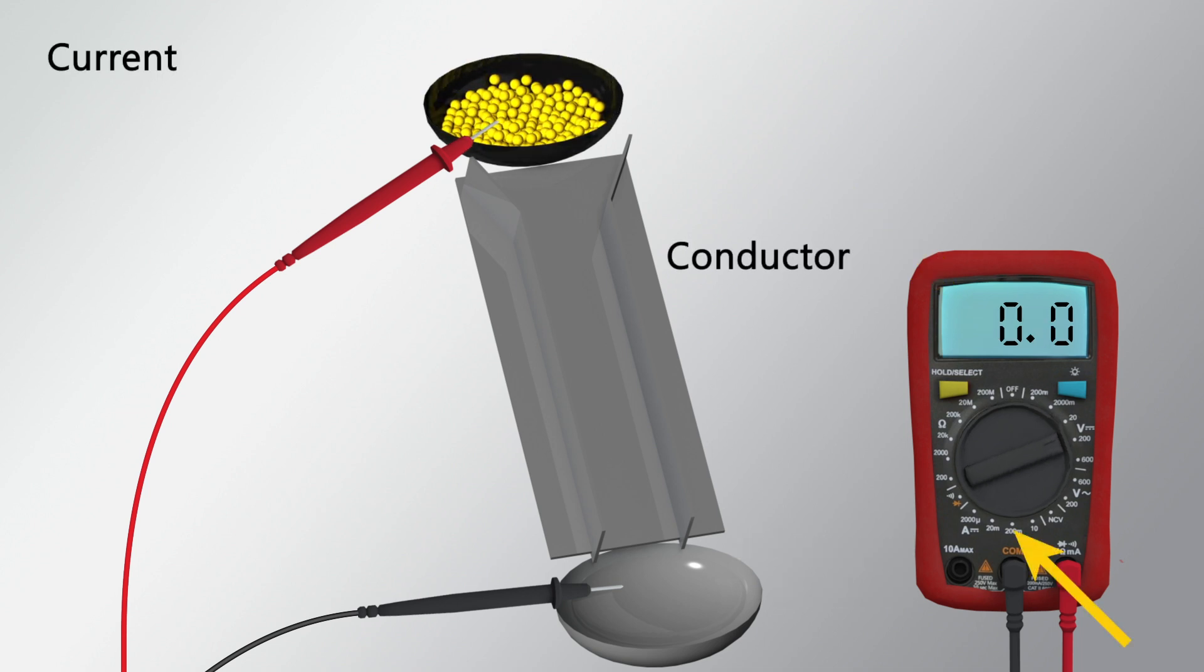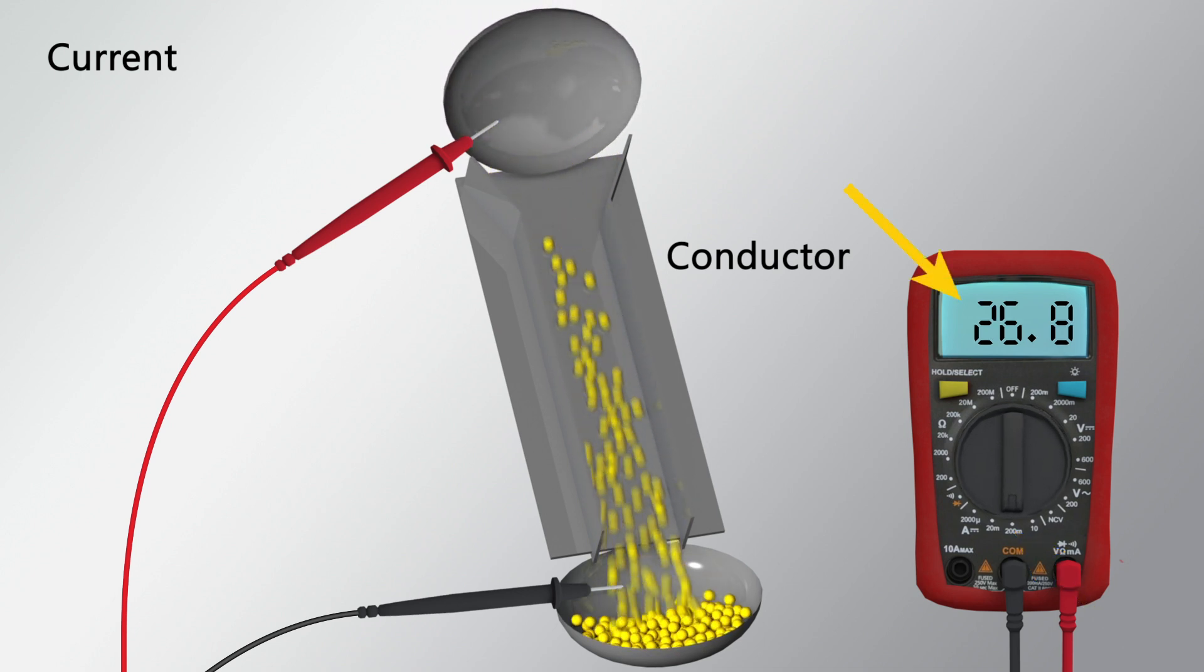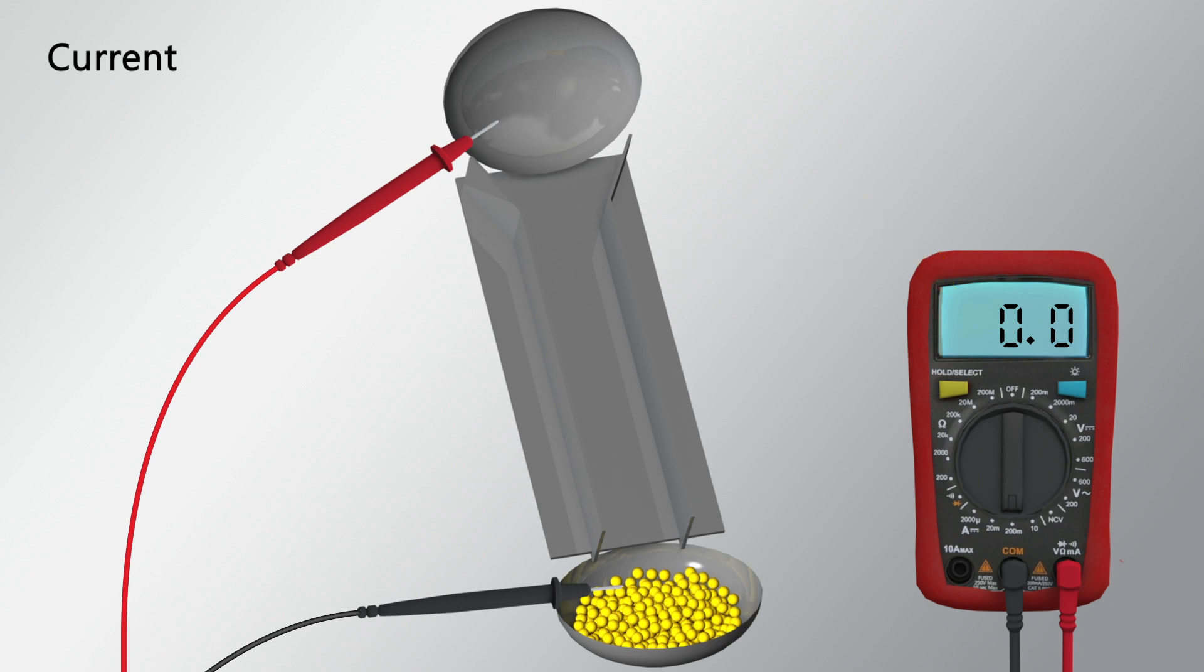Current is the flow of electrical charge through a conductor. It is helpful to think of current as the quantity of electrons passing through a point in a circuit at that moment. If the voltage between two points is zero, then no electrons are moving between those two points. If it is not zero, then some amount of current is flowing between them.